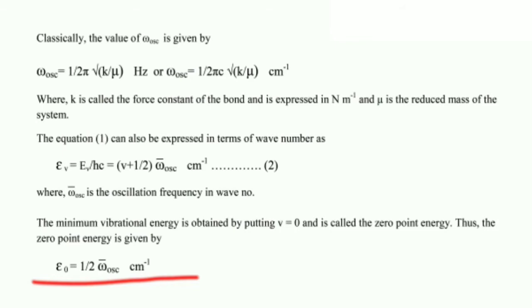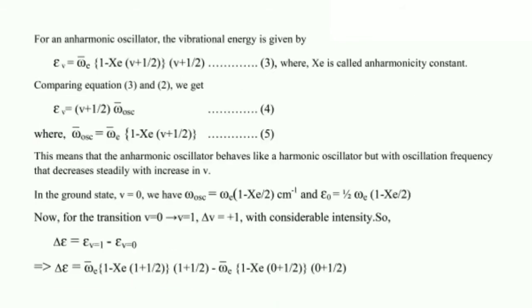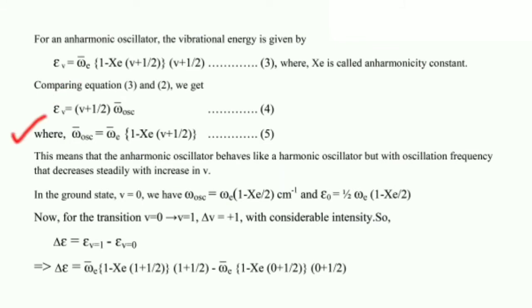For an anharmonic oscillator, the vibrational energy is given by: epsilon_v = omega_e_bar × (1 − xe × (v + 1/2)) × (v + 1/2) (equation 3), where xe is the anharmonicity constant. Comparing equations 3 and 2, we get epsilon_v = (v + 1/2) × omega_osc_bar (equation 4), where omega_osc_bar = omega_e_bar × (1 − xe × (v + 1/2)) (equation 5).